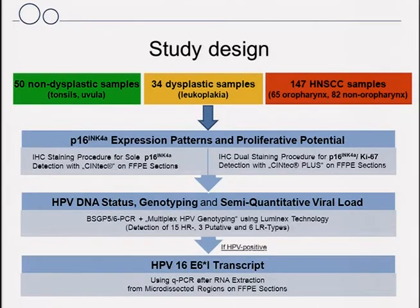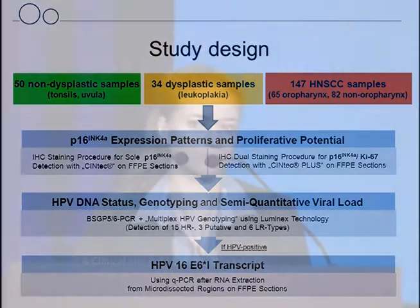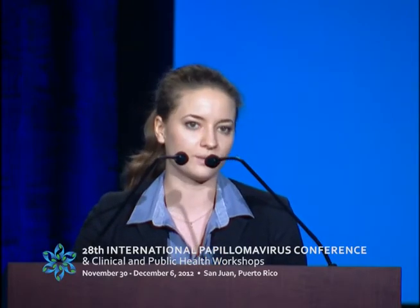In the first step, we analyzed P16 expression patterns and assessed the proliferative potential. We immunohistochemically stained for P16 alone using the Syntec kit on FFPE sections, and in the second step, we performed a dual staining procedure for simultaneous detection of P16 and Ki67, using the Syntec Plus kit by MTM-Roche on FFPE sections, which is intended for use in cervical cytology, so we applied some minor modifications.